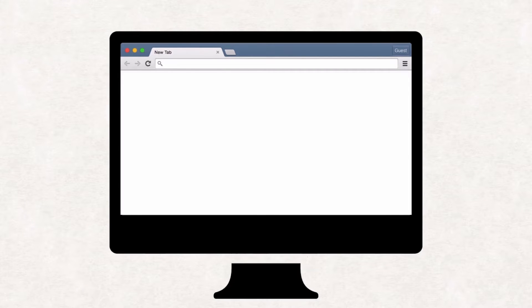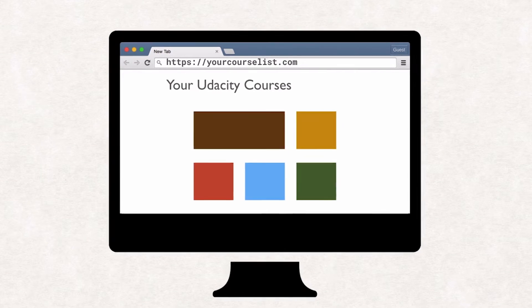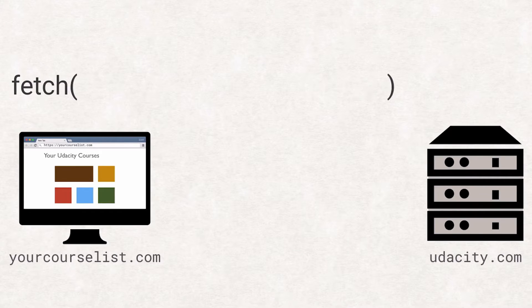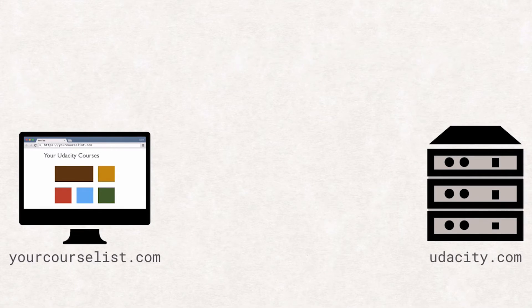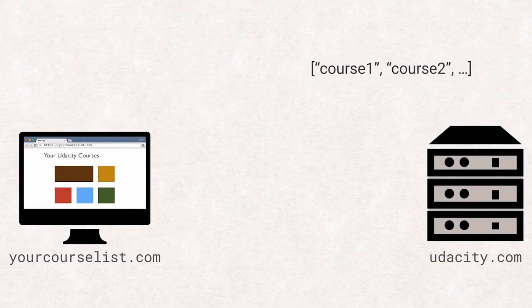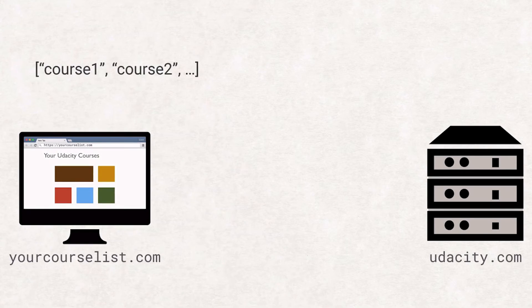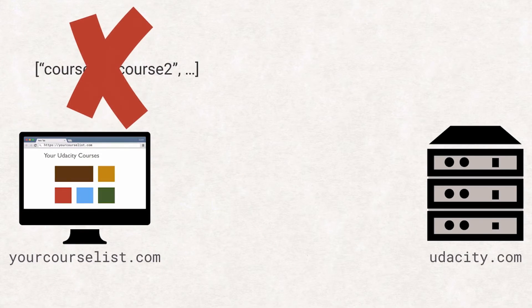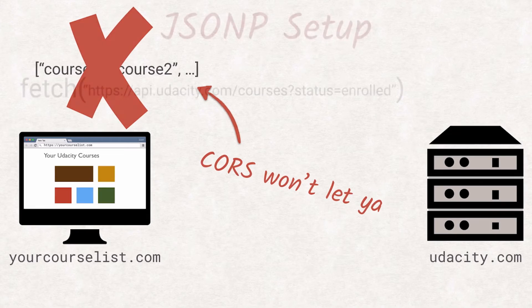Let's look at a fictional example. Let's say we are building an app at yourcourselist.com that wants to list all the Udacity courses the user is enrolled in. The naive approach would be to make a fetch request to api-udacity.com and use the return data to generate a list for the user. However, this will fail with a security exception as your host differs from Udacity's host.